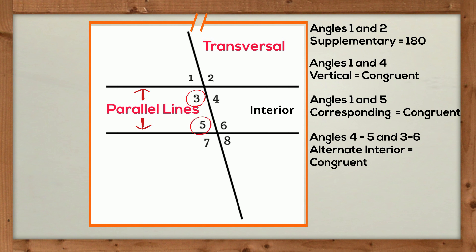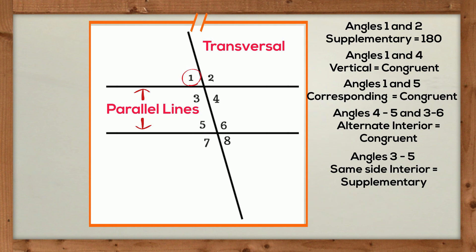Angles 3 and 5 are same side interior, and they are supplementary. Finally, if you look at angles 1 and 8, these are called alternate exterior angles, and they are also congruent.